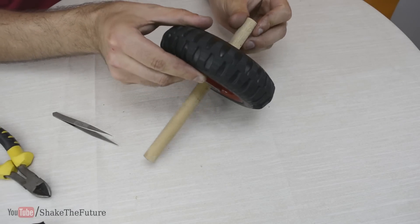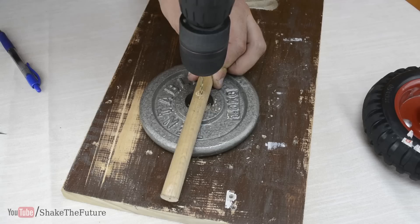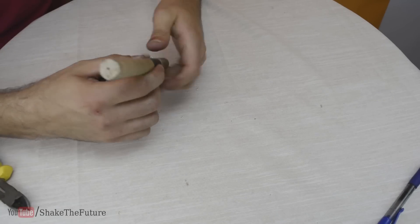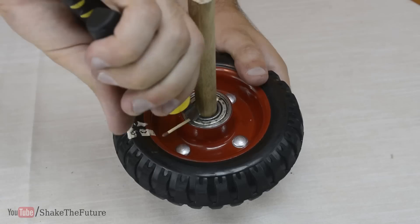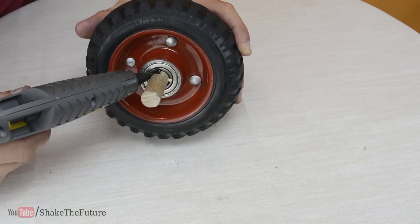Then I put on the wheel and marked the point for the second hole. I covered the stick with electrical tape to make a tighter fit. Then I put in the second match. To be on the safe side I also used some glue.